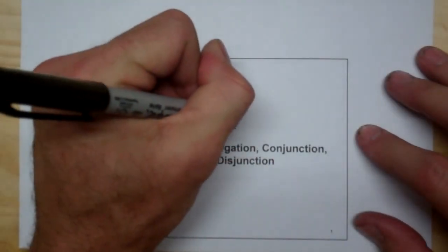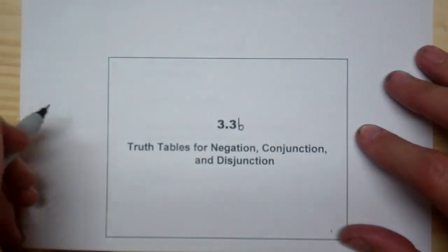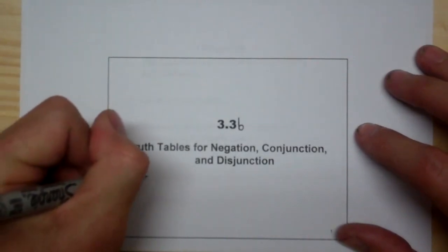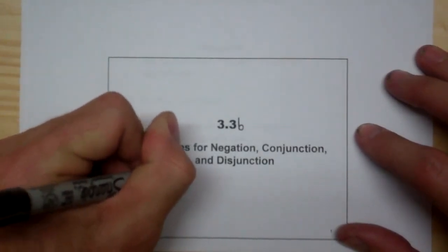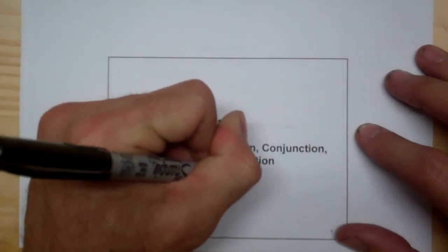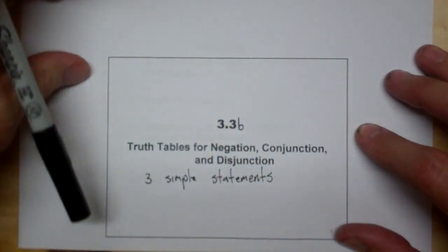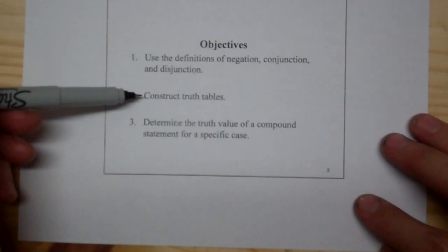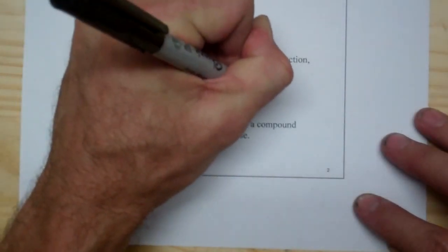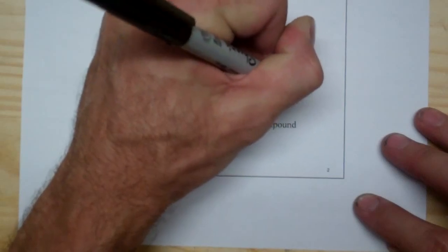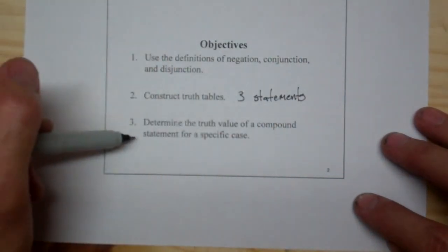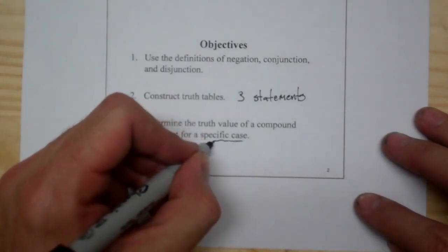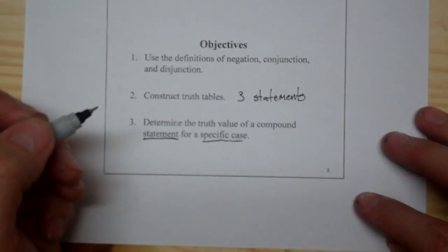Welcome to the 3dio for 3.3b. We're going to do slightly more complicated truth tables for negation, conjunction, and disjunction. This time we're going to use three simple statements to make it a little bit deeper. We are going to construct the truth tables for three statements and determine the truth value of a compound statement for a specific case.